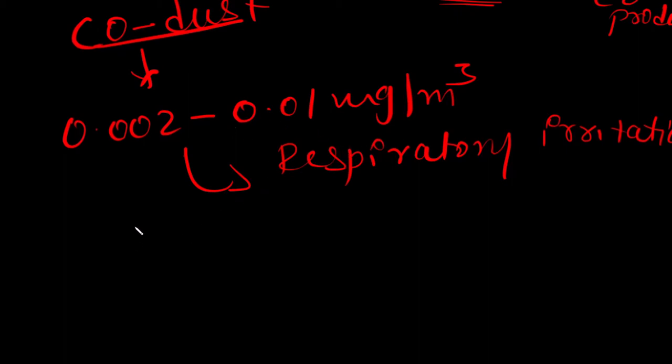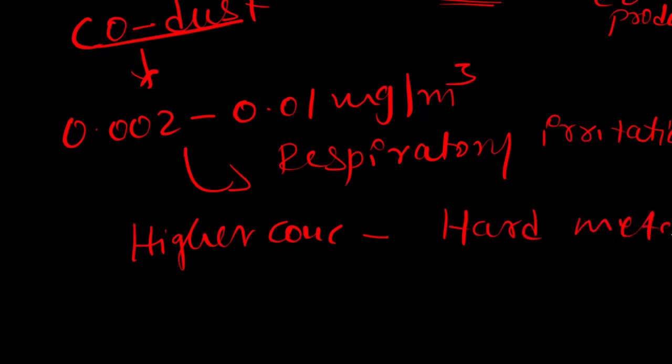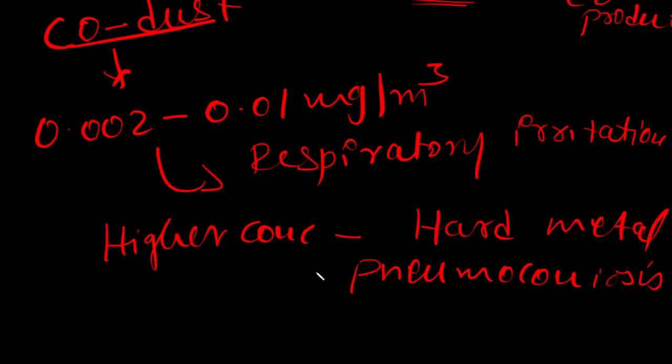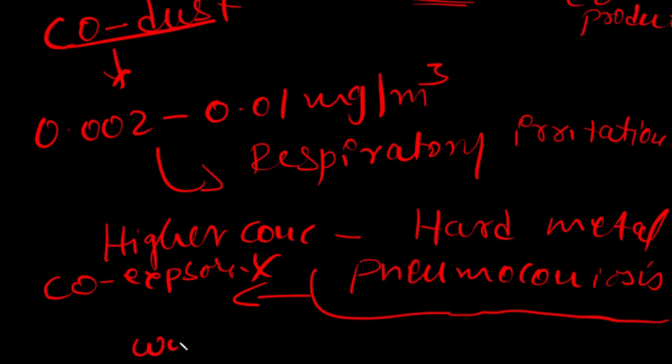Higher concentrations, however, lead to hard metal pneumoconiosis, which is nothing but a progressive form of pulmonary interstitial fibrosis. That means it damages the lungs. However, so far this hard metal pneumoconiosis was not observed by cobalt exposure alone, but was observed in workers exposed to cobalt tungsten carbide.